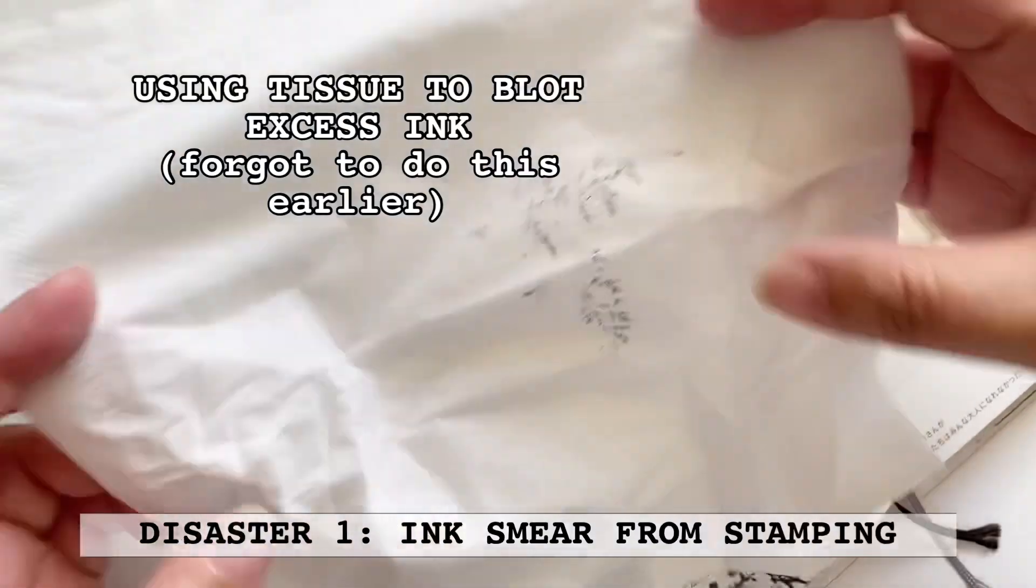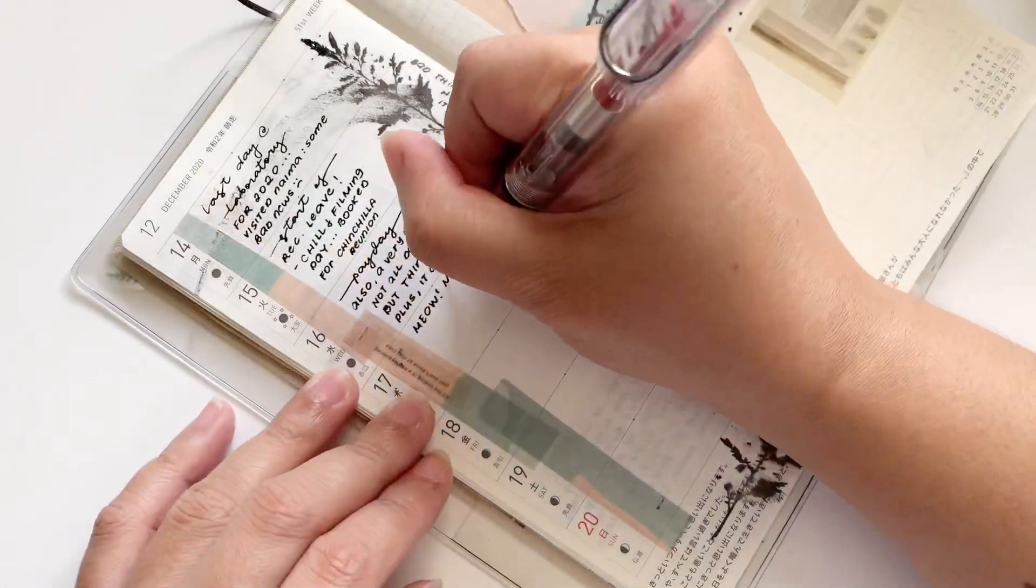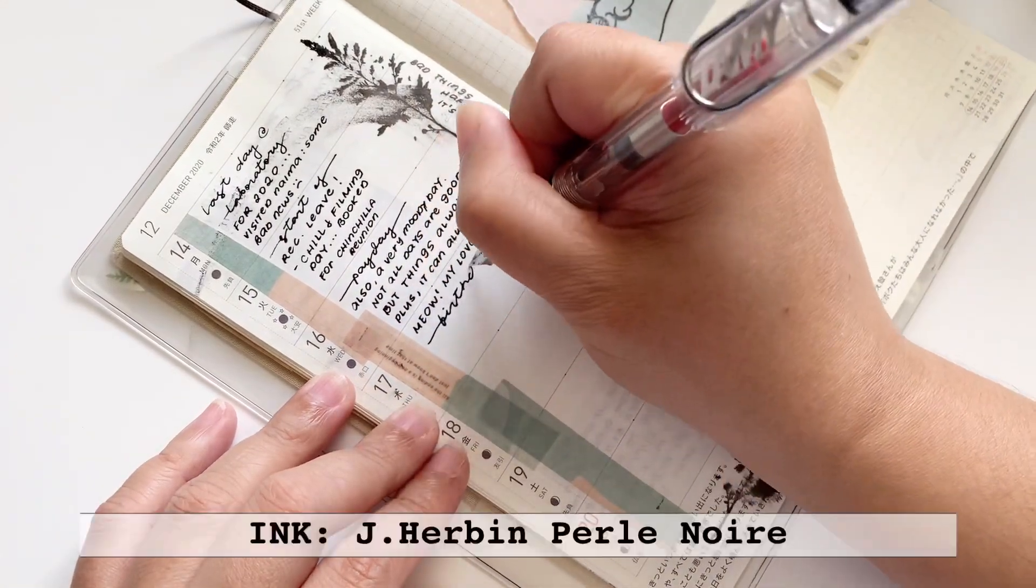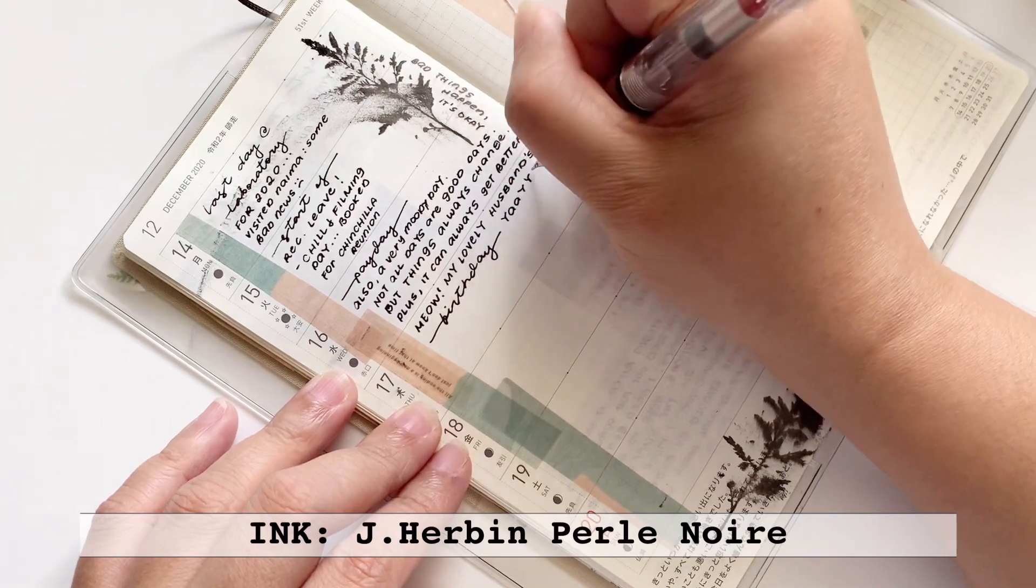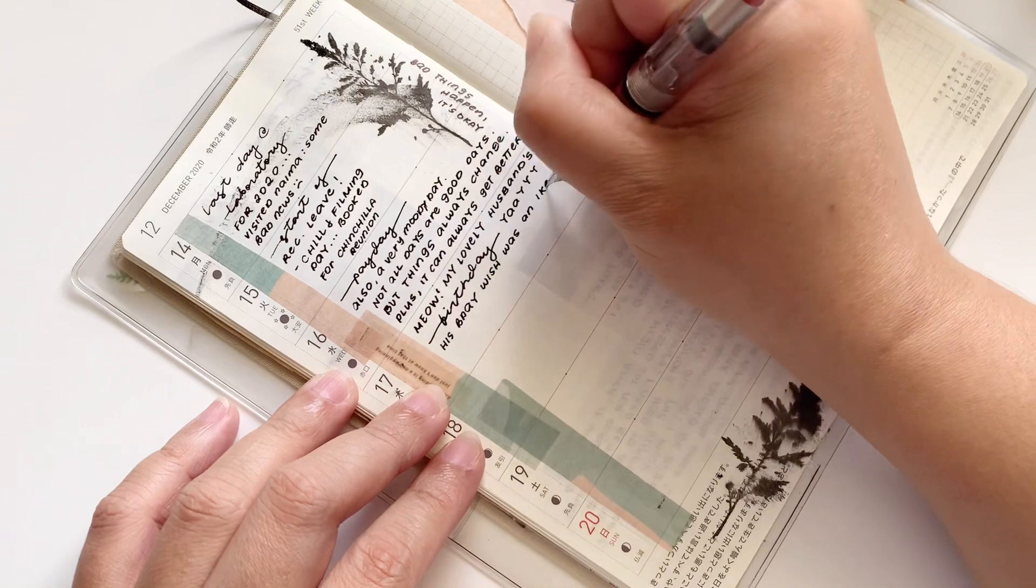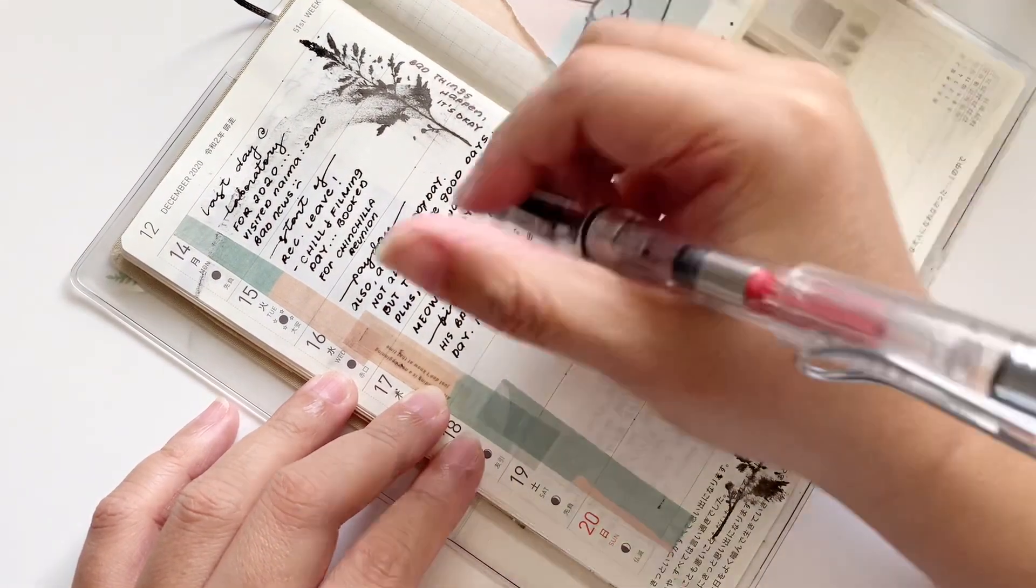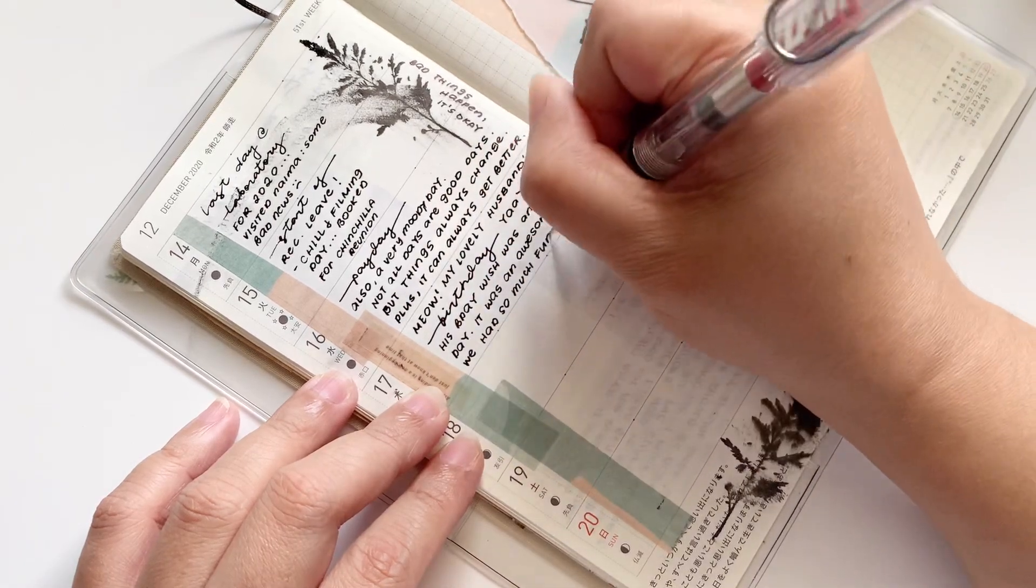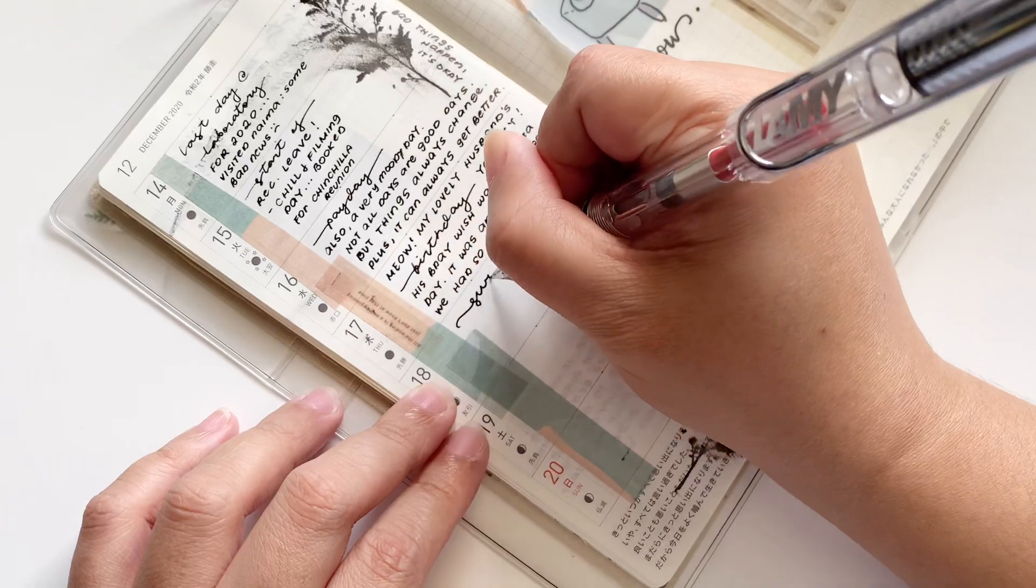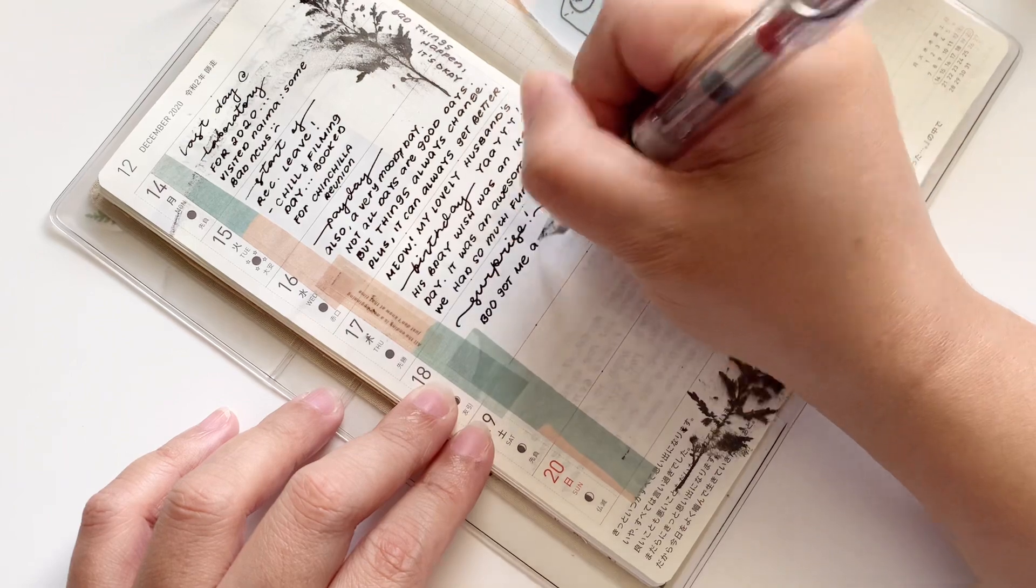I have the first disaster here which is the ink is smudging or smearing from the stamp. I just used tissue paper to go ahead and blot it. I should have blotted the ink earlier but I forgot all about that because I hadn't used stamps for quite some time apart from setting up this Hobonichi Weeks journal. Now I will not forget anymore.